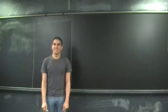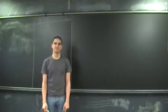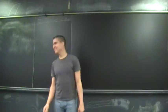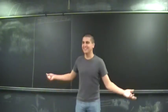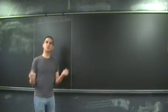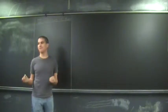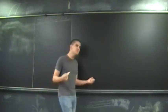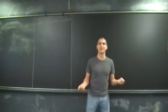This is Xandu, and he's going to talk today about divisors and maps. So yesterday we talked a little bit about affine and projective varieties and what it means for something to be smooth and what it means for something to be a curve.